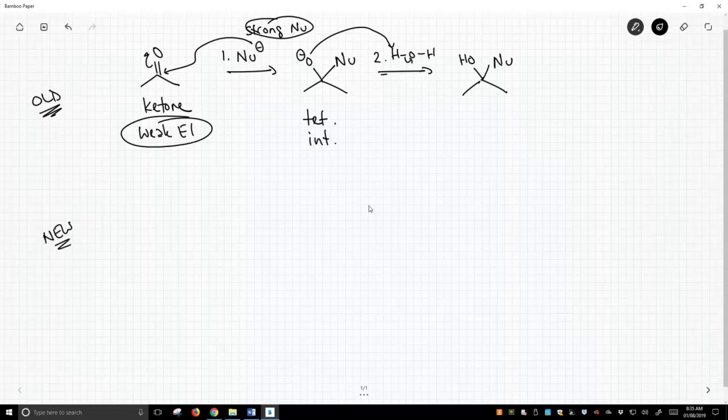We'll use it a lot, but we're going to see a new way to attack carbonyls. So, new. Okay, so let's start with a carbonyl. Again, I've chosen to do a ketone. This could be an aldehyde, and this is still a weak electrophile. Nothing has changed.